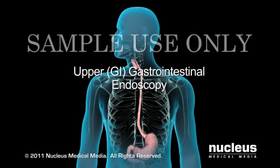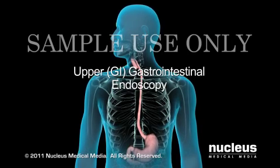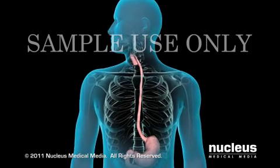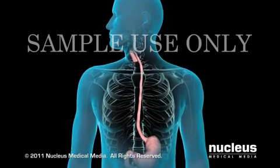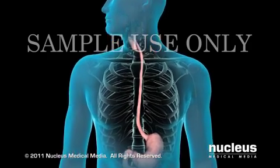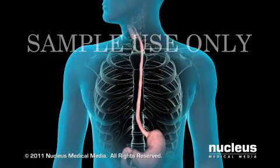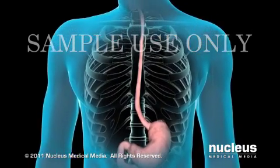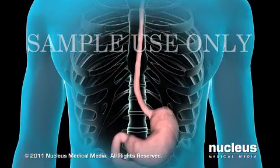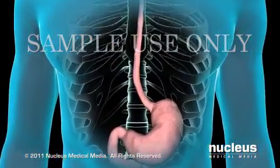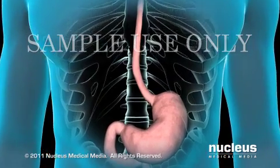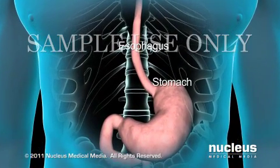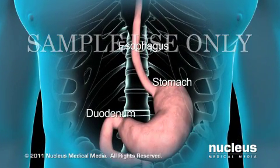An upper GI endoscopy, also called an esophagogastroduodenoscopy, or EGD, is a procedure that allows your doctor to view the mucosal lining of the upper portion of your gastrointestinal tract. This includes your esophagus, stomach, and duodenum.